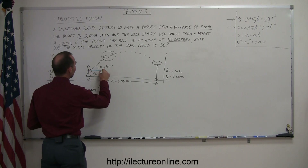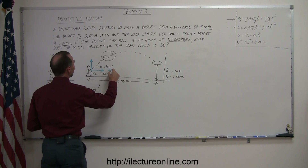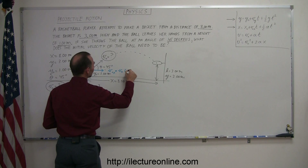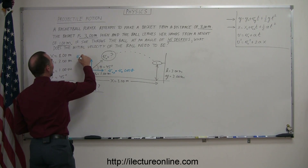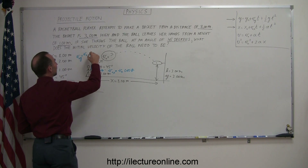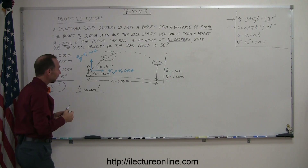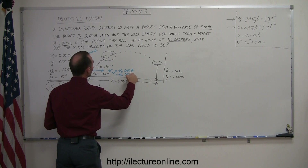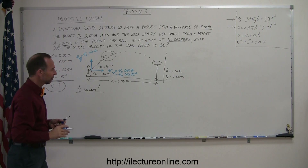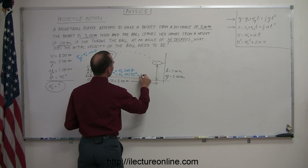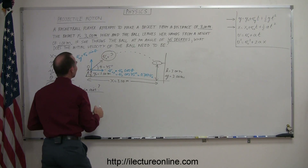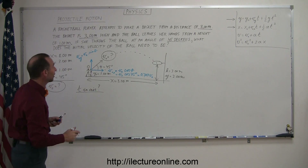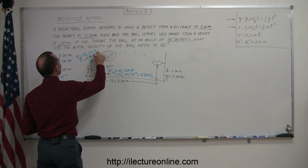We need the horizontal component and the vertical component of the initial velocity. V initial in the x-direction is equal to v initial times the cosine of theta, since the component is adjacent to the angle. V initial in the y-direction is equal to v initial times the sine of theta. Plugging in, that's v initial times cosine of 45 degrees, and the cosine of 45 degrees is 0.707, so this equals 0.707 v initial. Since at 45 degrees the sine and cosine are exactly the same, v initial in the y-direction also equals 0.707 times v initial.